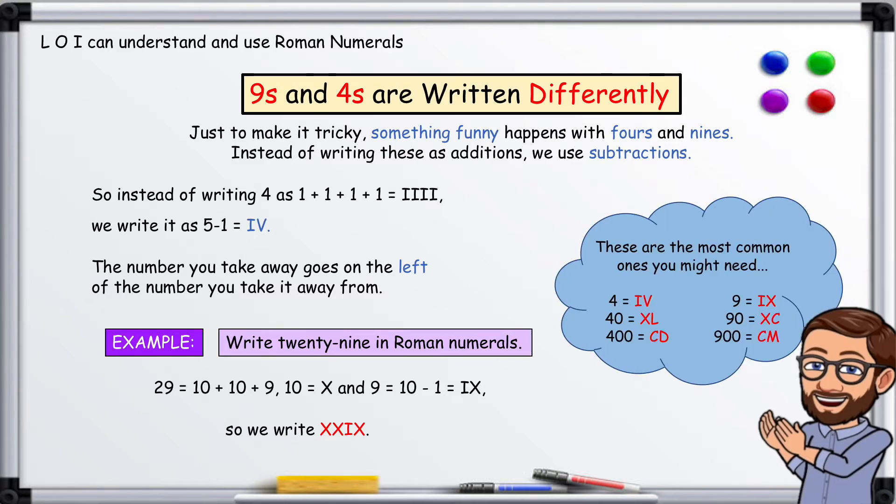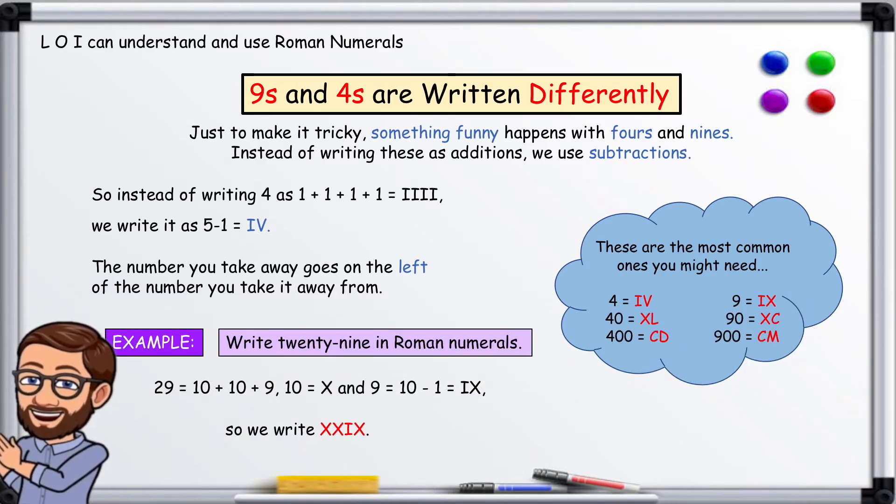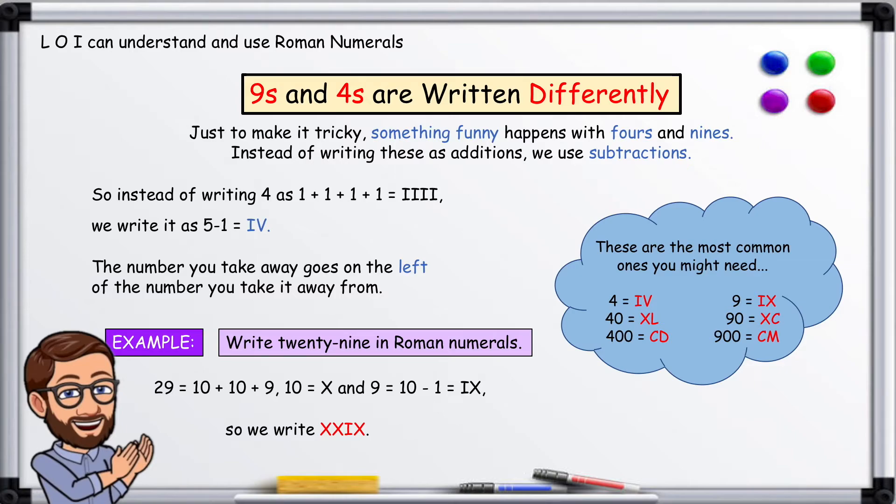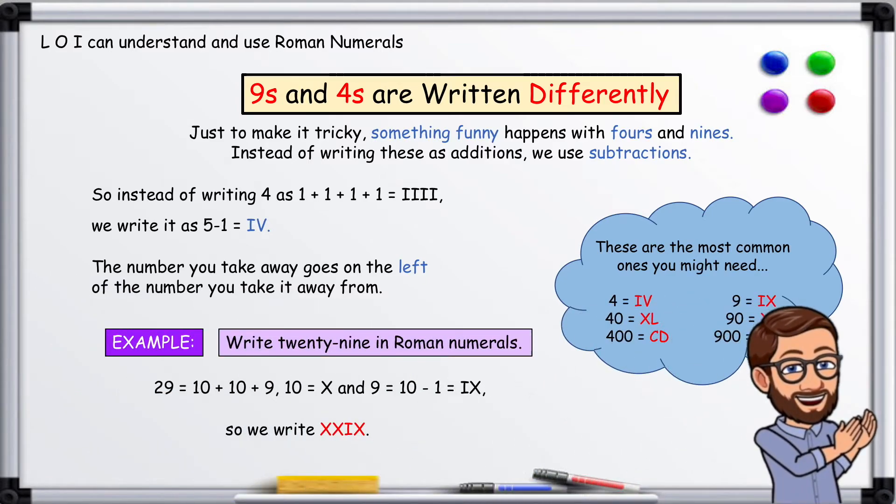These are the most common ones you might need. 4 equals IV, 9 equals IX, 40 equals XL, 90 equals XC, 400 equals CD, 900 equals CM.